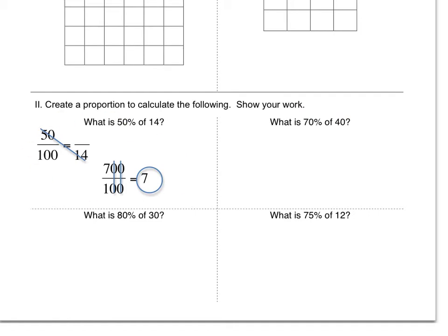So I'm going to do this next one. What is 70% of 40? Well, that's 70 over 100. And that's equal to, we don't know what the actual number is, but it's out of 40. Like Mr. Schlepper was showing us in class, if we cross multiply these two and then divide by this number, we should get our answer.